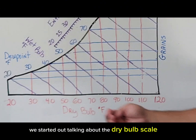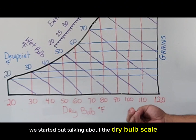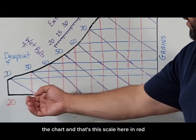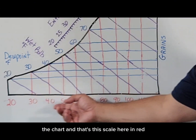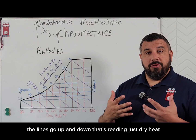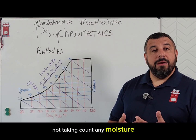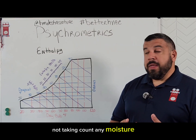We started out talking about the dry bulb scale of the chart, and that's this scale here in red. The lines go up and down. That's reading just dry heat, not taking into account any moisture.